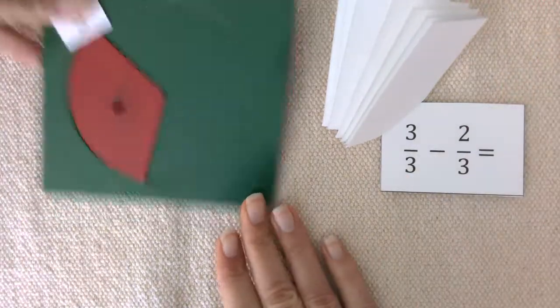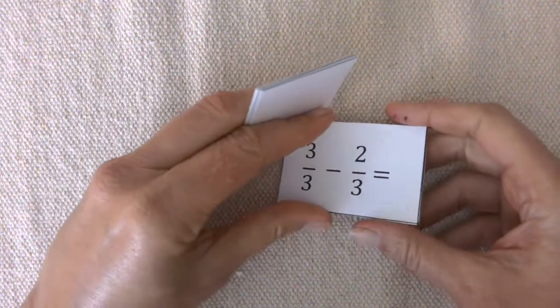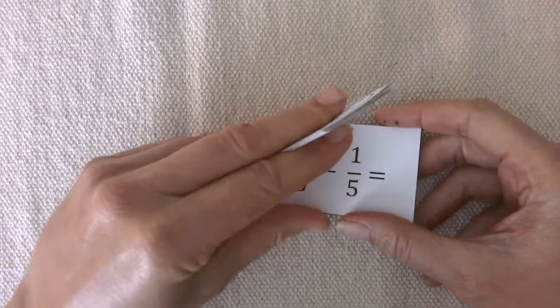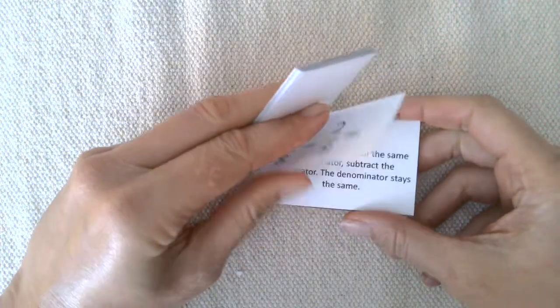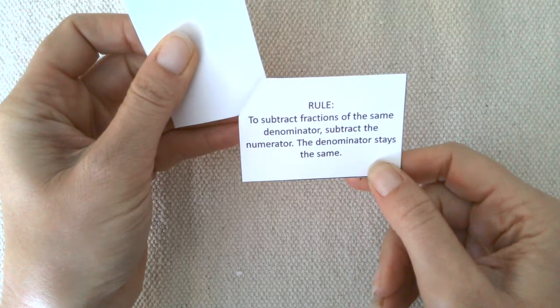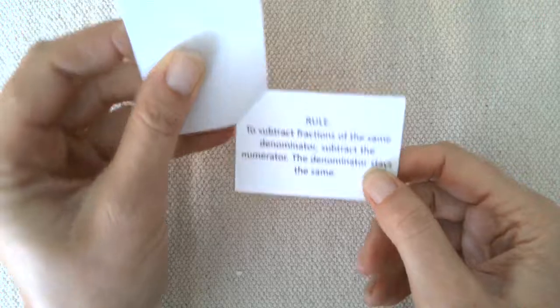Now, when you've done lots more examples with your students, they might discover the rule. Or, if they don't, you can let them know the rule. To subtract fractions of the same denominator, subtract the numerator. The denominator stays the same.